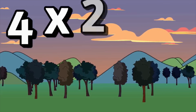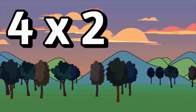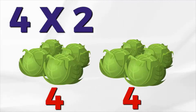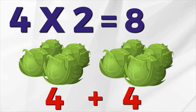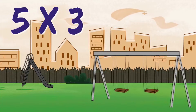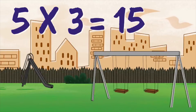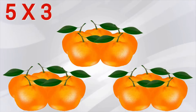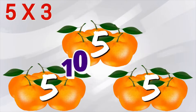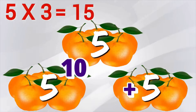What is four times two? Eight. Four times two equals eight. Four times two is the number four two times — the same as four plus four. It's two fours, and two fours equals eight. Four times two equals eight. Now let's try five times three. Five times three equals 15. Five times three is the number five three times — the same as five plus five plus five. It's three fives. Five plus five equals ten, plus another five is 15. Five times three equals 15.